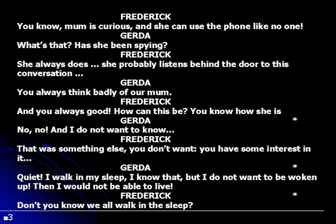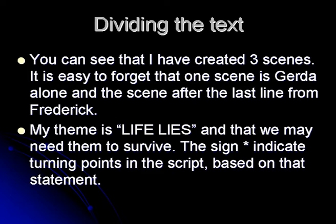So you can see that I have created three scenes. It is easy to forget that one scene is at the start when the sister, Jada, is alone. And you also easily forget about the scene that is after the last line — even there you have to find some kind of actions. It's not the end when someone says the last sentence. I have already decided that my theme is 'life lies' and that we need them to survive. And the sign indicates turning points in the script based on that statement: we need life lies to survive.